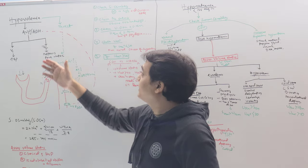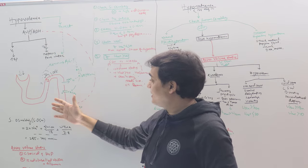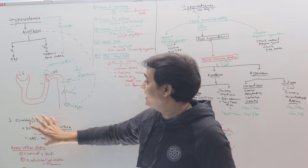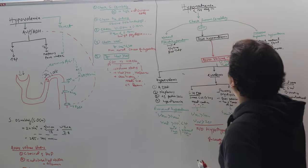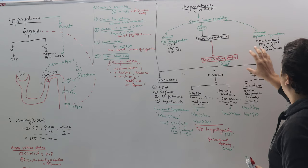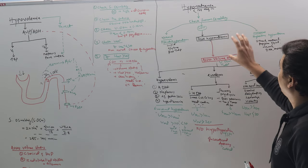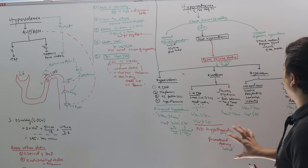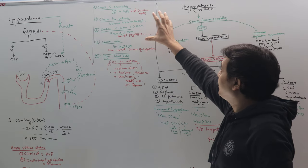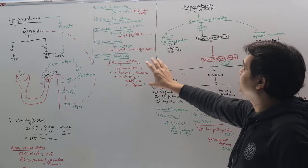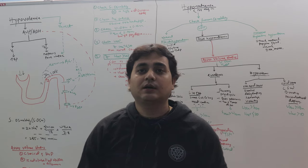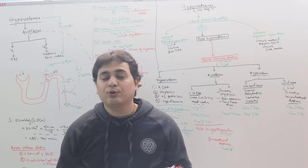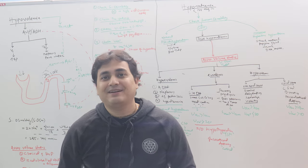Today we discussed the concept of water and sodium balance in the body, the formula for serum osmolality, how sodium is the predominant force in maintaining osmolality, the hyponatremia algorithm, and how to reach a diagnosis using serum osmolality, urine osmolality, and spot urine sodium. We also covered the five-step diagnostic formula. In the next class, we will discuss the treatment algorithm and what to be careful of while treating hyponatremia.